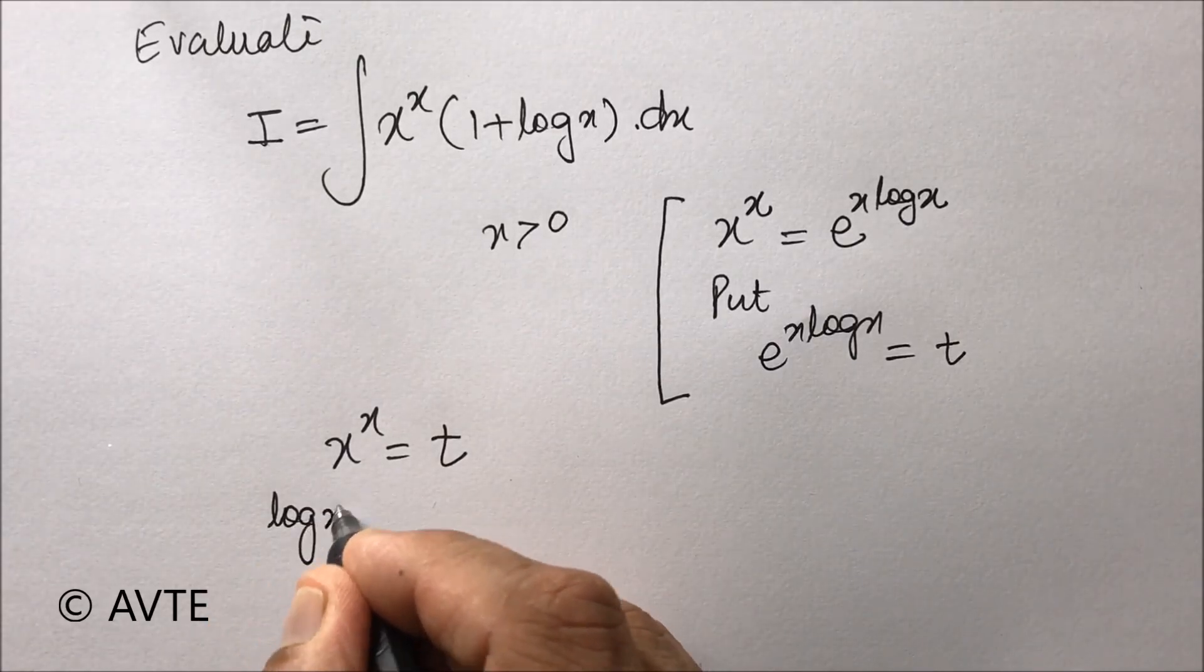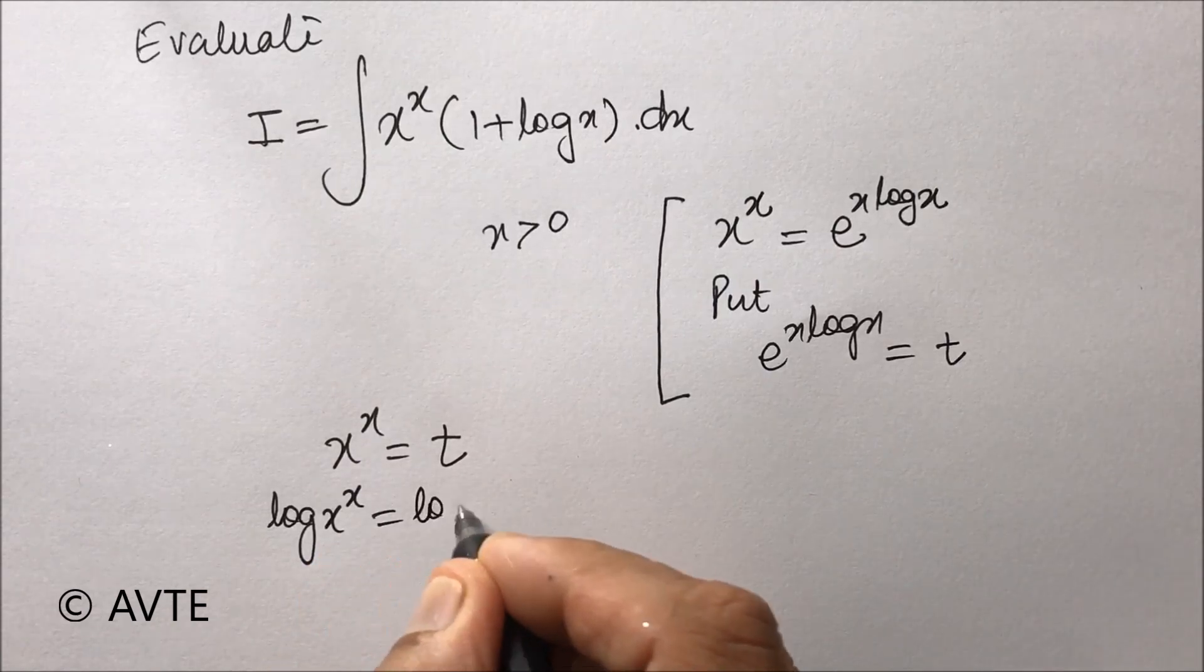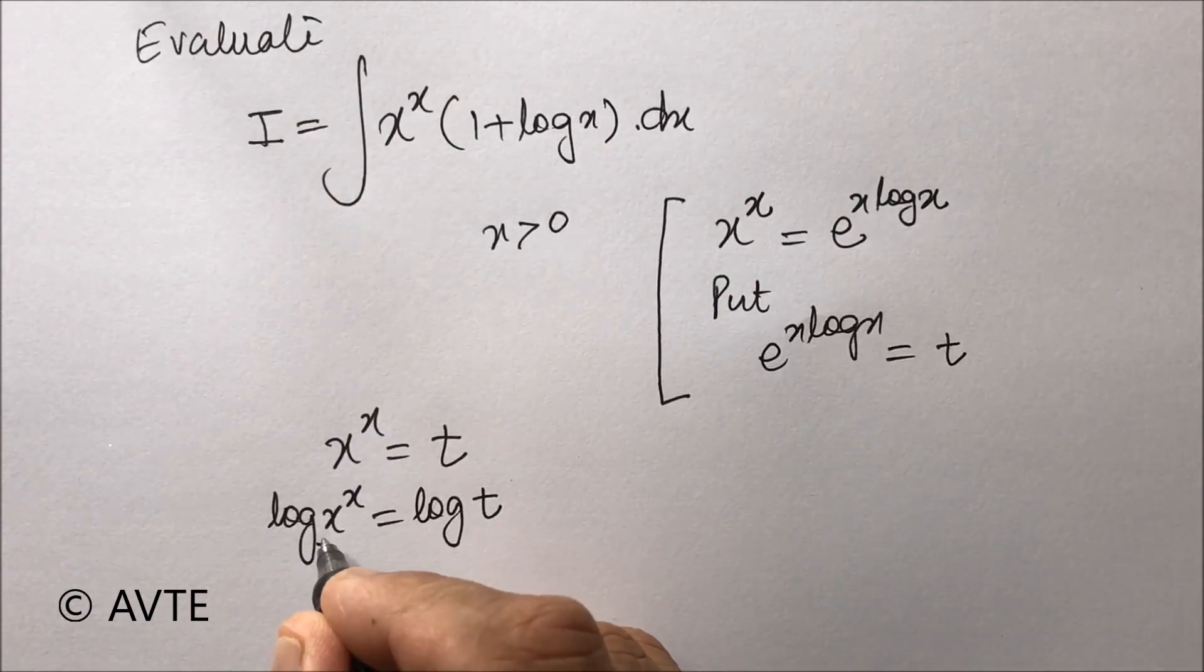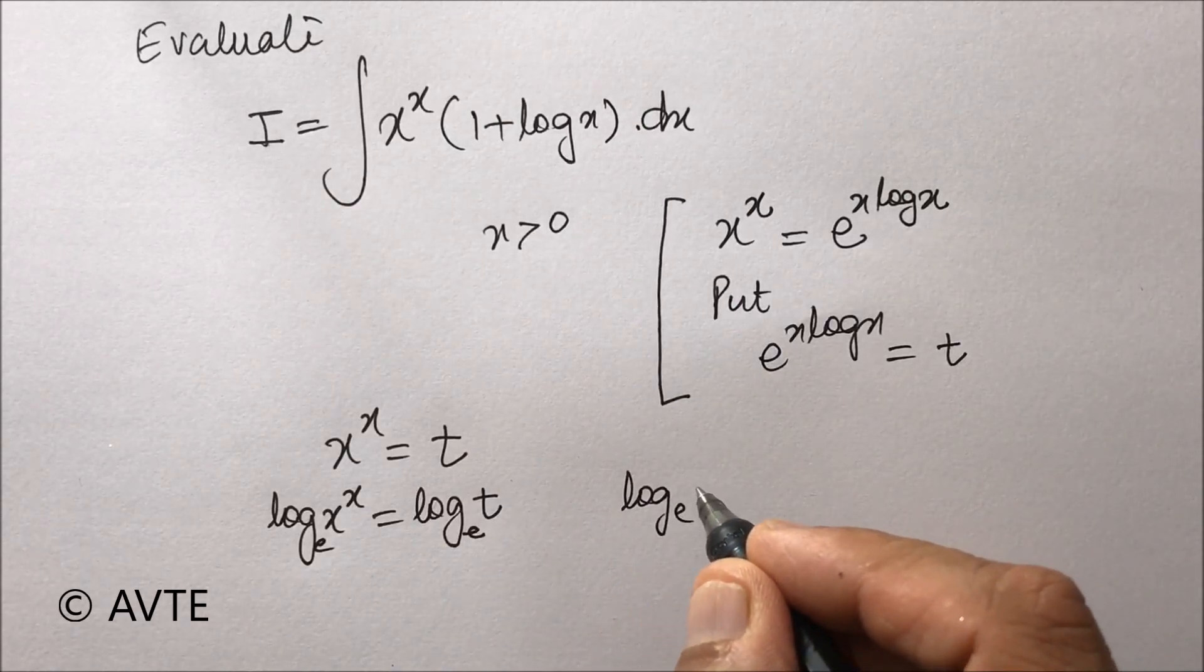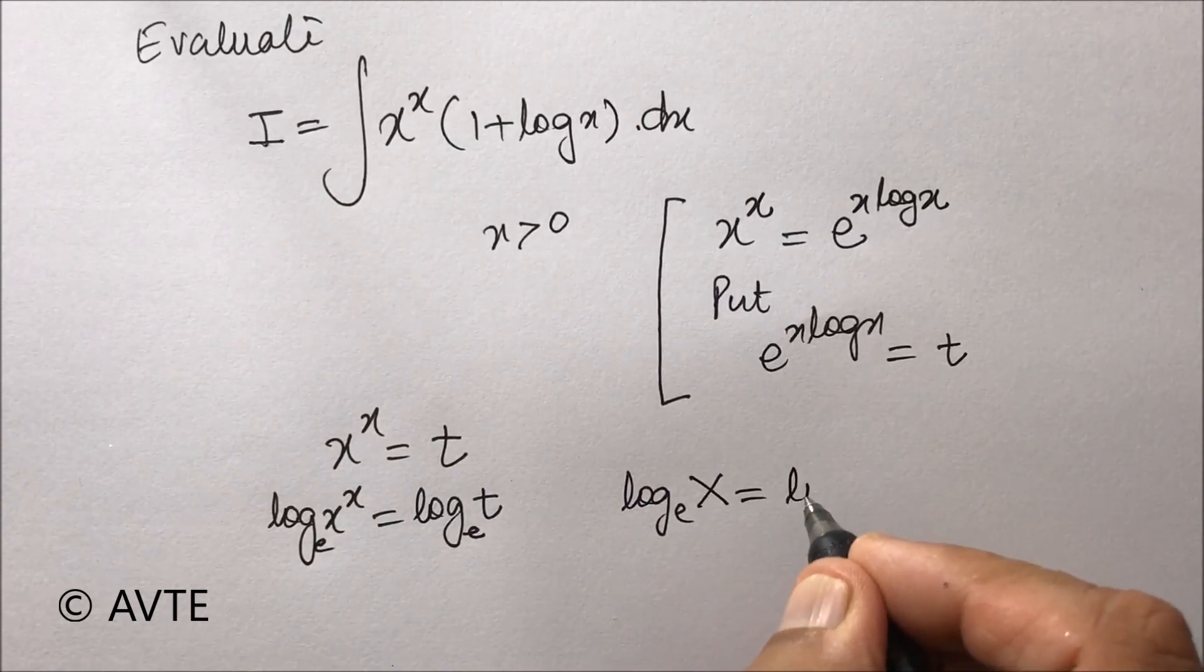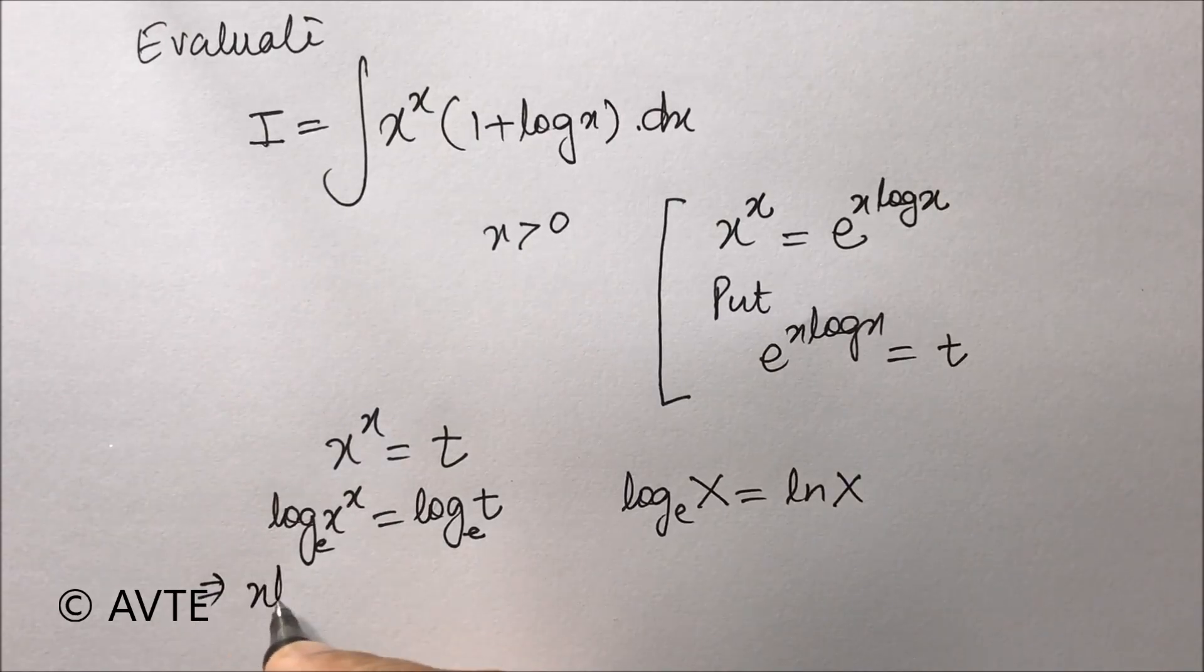After we take log on both sides, remember when no base is given it is base e. So you can also take log_e(x) as ln(x) if you want, but we will continue with log.